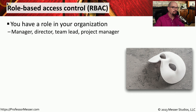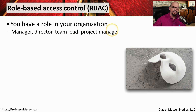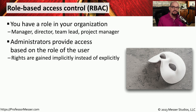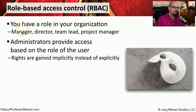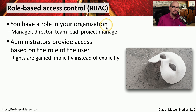A more centralized control model would be a role-based access control. This access control is based on your job function. So if you are a manager, you have a certain type of rights and permissions to data. If you're a director, you have a different set of rights and permissions. And if you're a team lead or project manager, there are different sets of permissions for those roles as well. This starts with the administrator creating a number of different groups — a manager group, a director group, a team lead group, and a project manager group. They would then assign rights and permissions to the group itself. Once the group is created and rights are assigned, the administrator will add users to that group. Each user added to the group receives the rights and permissions associated with that group, so we don't have to assign specific permissions directly to a user — we can simply add them to the group and they receive all of those permissions implicitly.